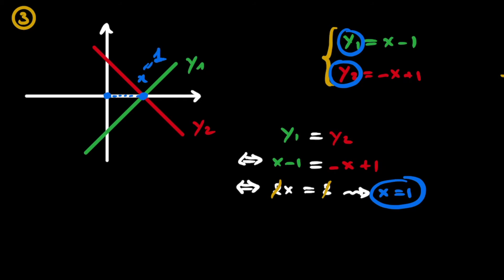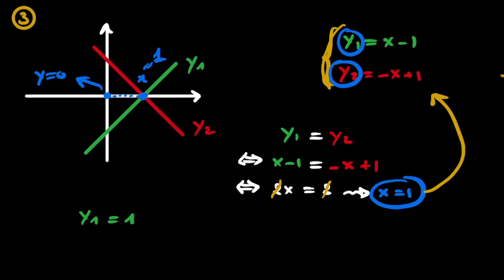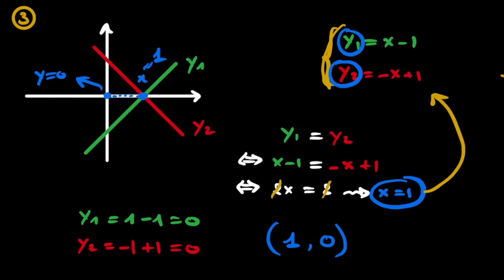We already know y = 0 since the intersection is on the x-axis. Checking: for y1, x minus 1 = 1 minus 1 = 0. For y2, minus x plus 1 = minus 1 plus 1 = 0. Both confirm y = 0. So the intersection point is x = 1 and y = 0.